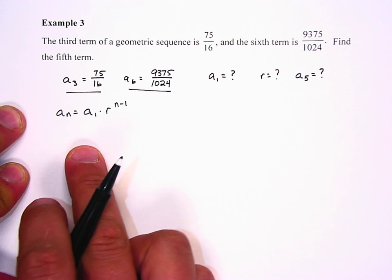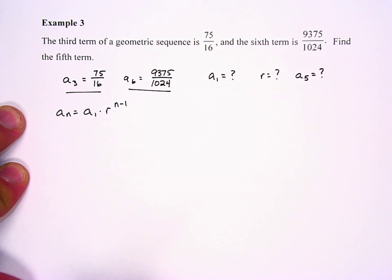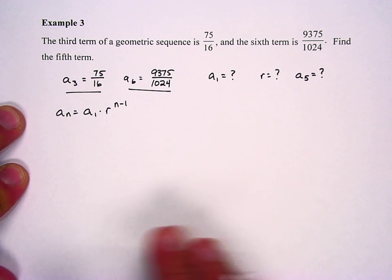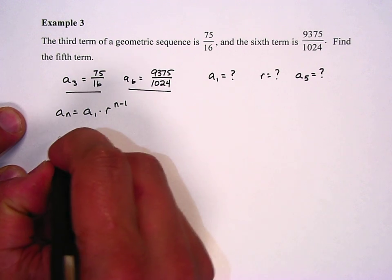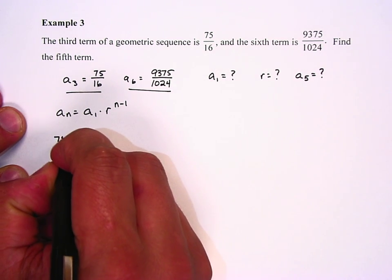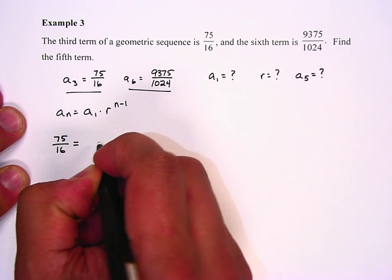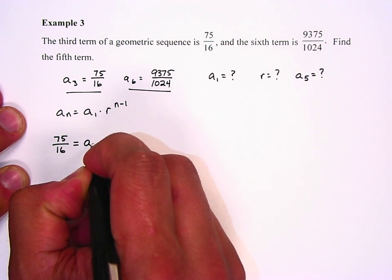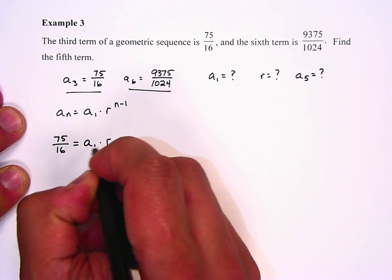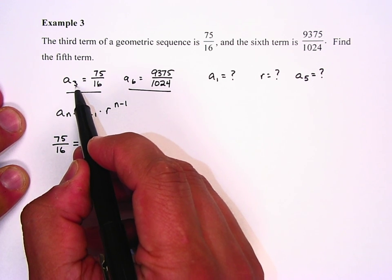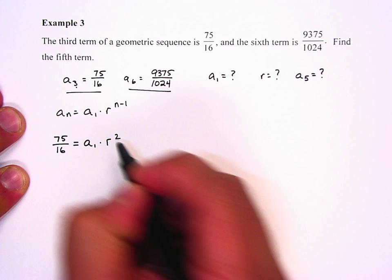And if we do that, we should be able to find a sub 1 and r using systems of equations. So let's first do a sub 3. So we're going to say 75 over 16 equals, we don't know a sub 1, we don't know r, but we know that since n is 3, we know it's r squared.